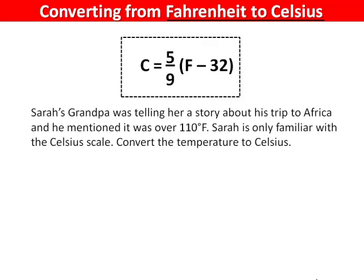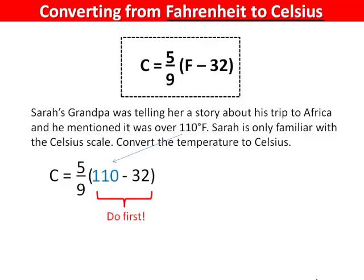Sarah's grandpa was telling her a story about his trip to Africa, and he mentioned it was over 110 degrees Fahrenheit. Sarah is only familiar with the Celsius scale. Convert the temperature to Celsius. Begin by substituting in the 110 in place of F. According to order of operations, we must do brackets first, so 110 minus 32 is 78. Next, we take 5 divided by 9 multiplied by 78 to get 43.3 degrees Celsius.